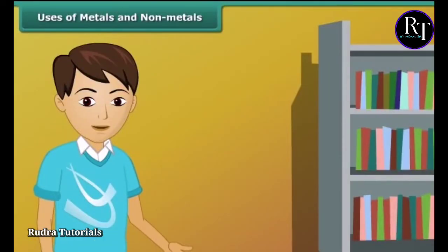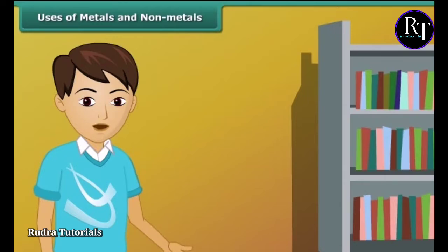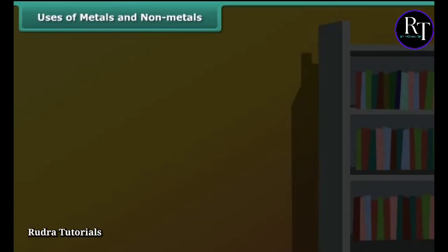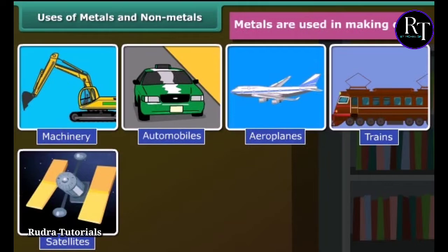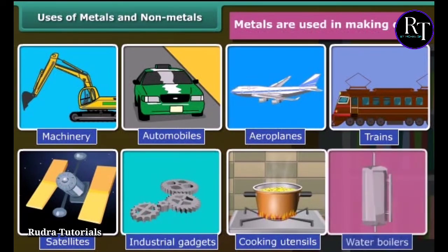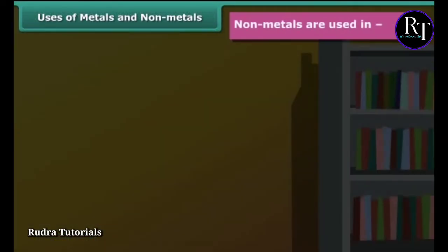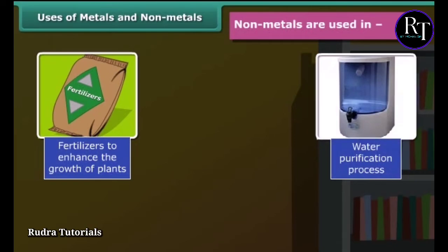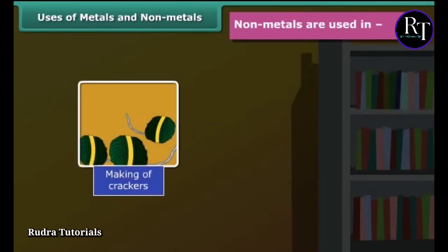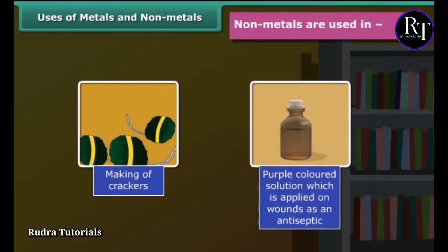Till now we have learnt about the physical and chemical properties of metals and non-metals. Now let's move on to the uses of these materials. Metals are hard in nature, so they are used in making machinery, automobiles, aeroplanes, trains, satellites, industrial gadgets, cooking utensils, and water boilers. Non-metals are used in fertilizers, water purification, life-supporting air, crackers, and as antiseptic solutions on wounds.